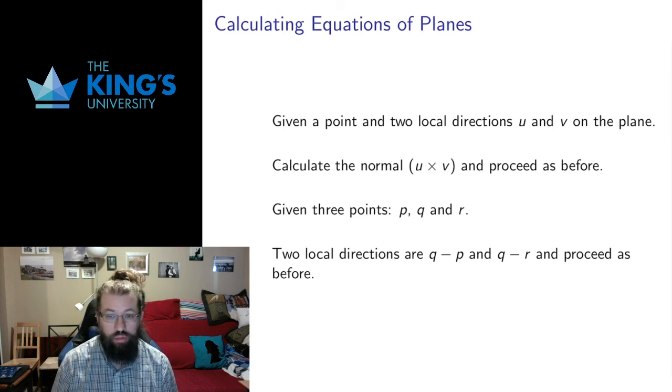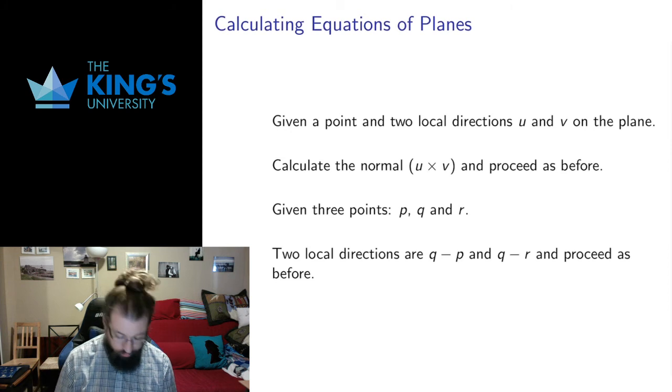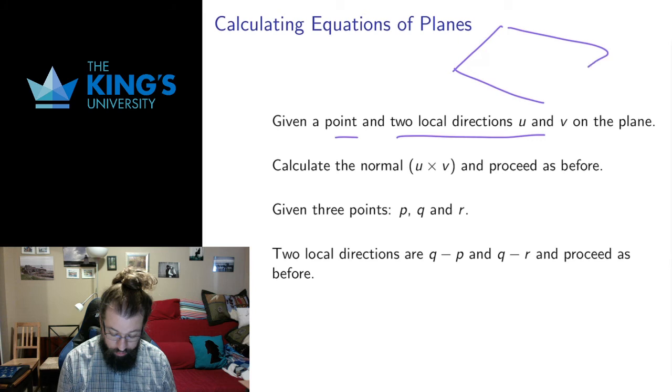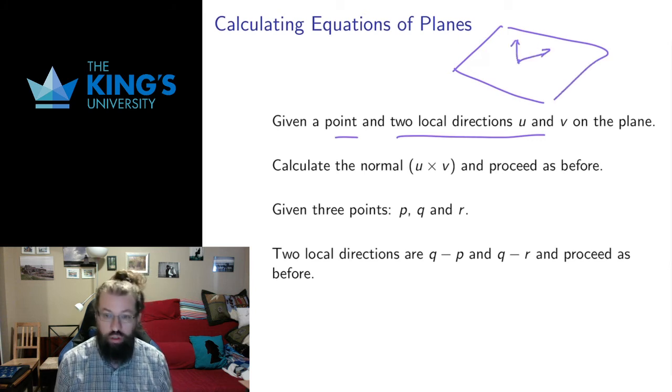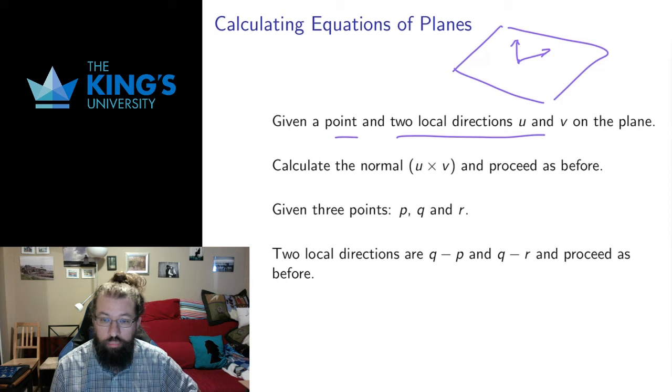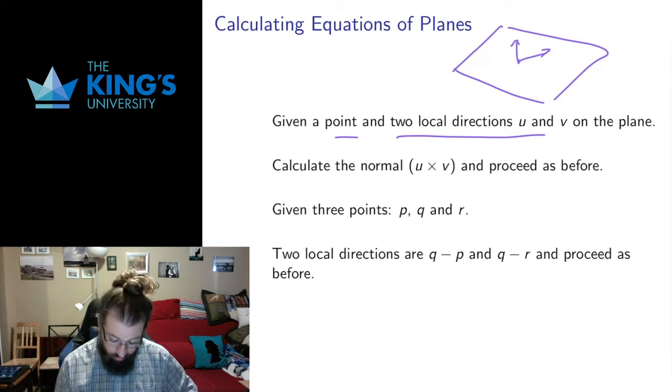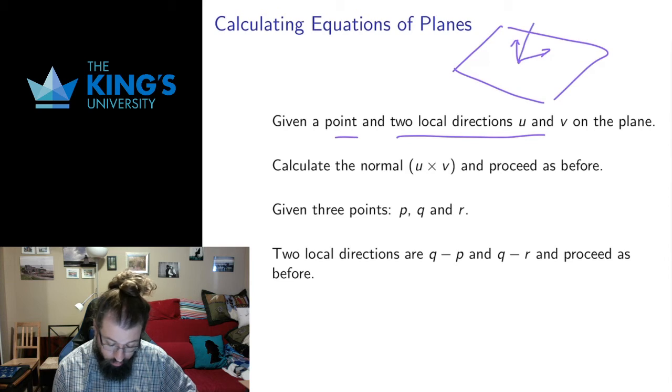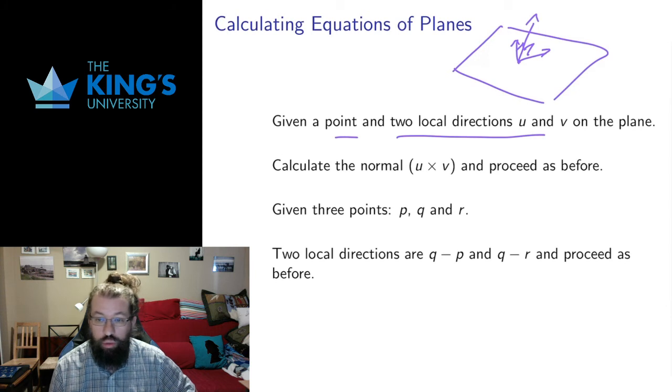That's not usually how planes are described, so I want to give two other situations for how we do this. Sometimes we're given a point and two local directions on the plane. So if I have a plane here and a point, I can have a local direction here and a local direction here, which are vectors that actually sit on the plane. And that's not a terribly uncommon way to describe a plane. We have an operation in R³ that takes two vectors and produces a third vector which is perpendicular to both the original vectors. That operation is the cross product.